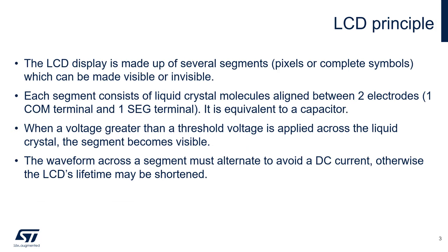The LCD display is made up of several segments — pixels or complete symbols are supported — which can be made visible or invisible. Each segment consists of liquid crystal molecules aligned between two electrodes: one COM terminal and one SEG terminal. When a voltage greater than a threshold voltage is applied across the liquid crystal, the segment becomes visible. The waveform across a segment must alternate to avoid a DC current; otherwise, the LCD lifetime may be shortened.